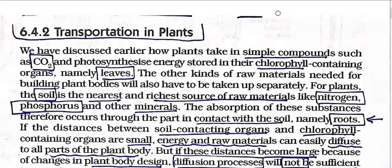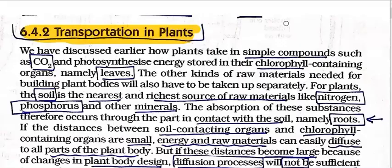Good morning students. Continuing chapter 6, Life Processes, part 5: transportation in plants. In the last video we saw transportation in animals — the main transporting organ in human beings is the heart. We saw the structure of the heart and how blood transfers in the human body. Now, how transportation occurs in plants: xylem and phloem are called conducting tissue and vascular tissue. Xylem transfers water and mineral salts; phloem transfers photosynthesis products like glucose and carbohydrates from the leaves to different parts.